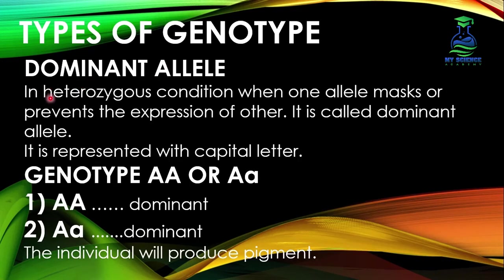What are dominant alleles? In the heterozygous condition, when one allele masks or prevents the expression of the other, it is called the dominant allele. Dominant alleles are always represented by a capital letter. In heterozygous condition, the allele that hides or masks the effect or expression of the other allele is called the dominant allele. So when a person has genotype capital A capital A, or capital A small a, in both cases, due to the presence of dominant allele A, pigment production will occur in the individual's body.